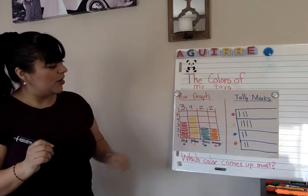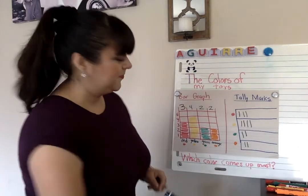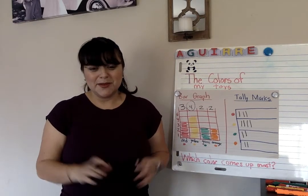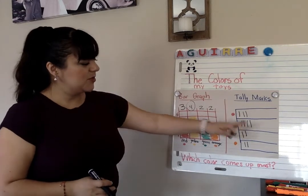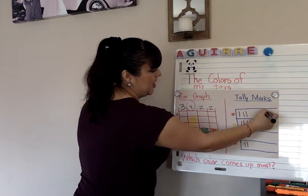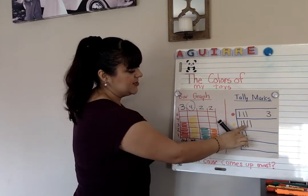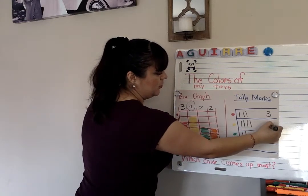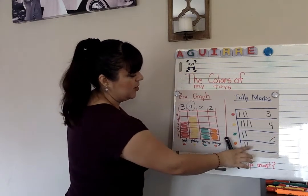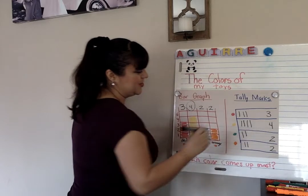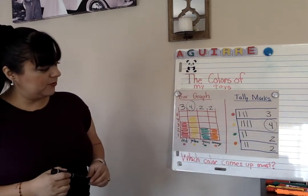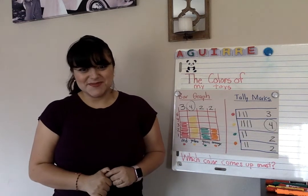We know that four is the biggest number, so I had the most yellow in the toys I collected. We can confirm that same information with the tally marks: three red toys, four yellow toys, two green toys, two orange toys. I can see that the most was yellow toys. Great!